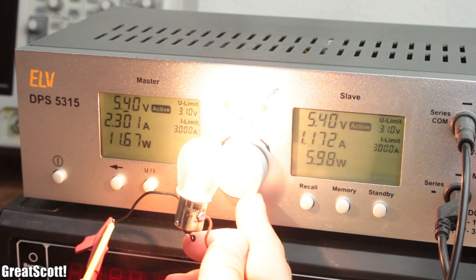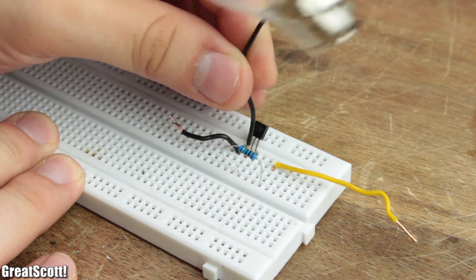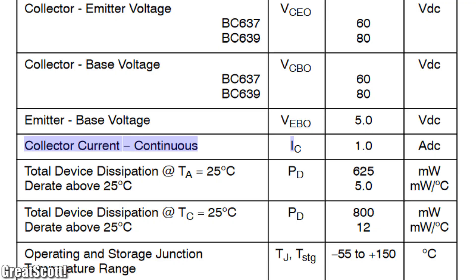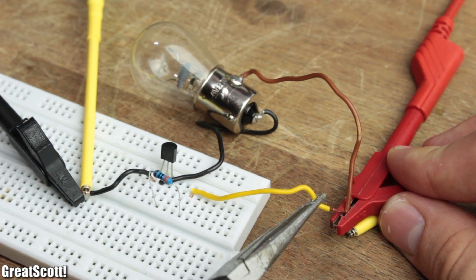Okay, moving on. Now if I want to control a bigger load like this 6-volt 21-watt light bulb, it is pretty obvious that the small BC637 with a maximum collector current of 1 amp cannot handle this job.